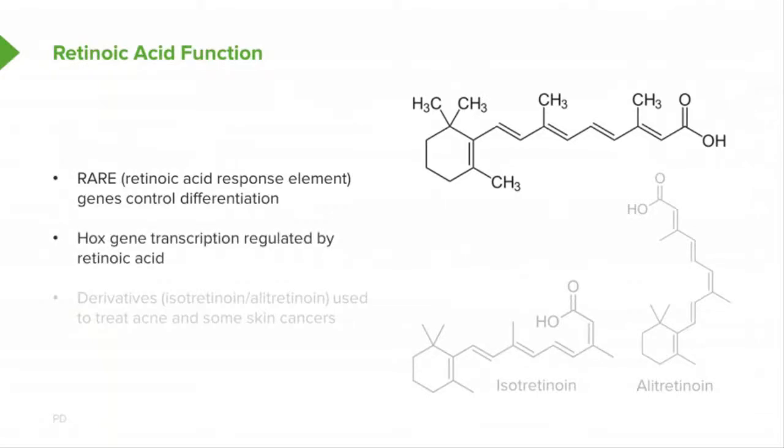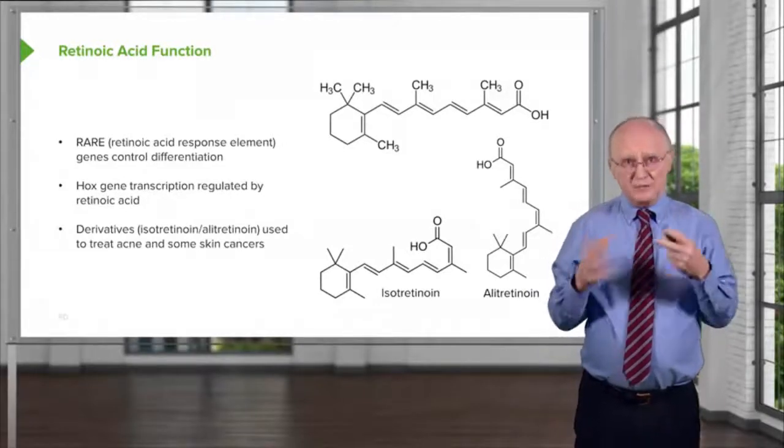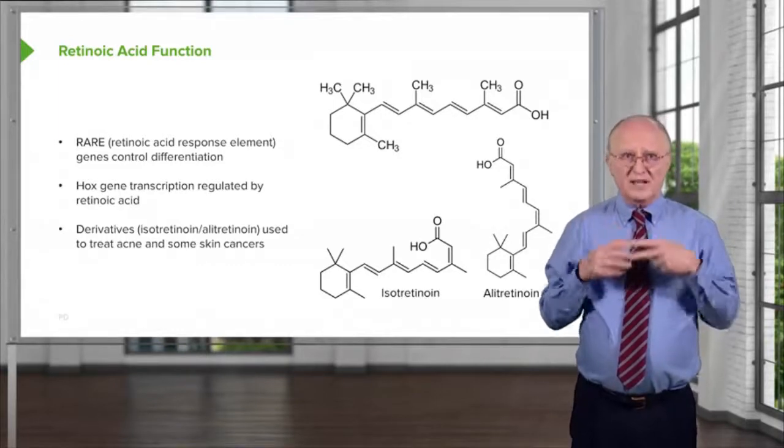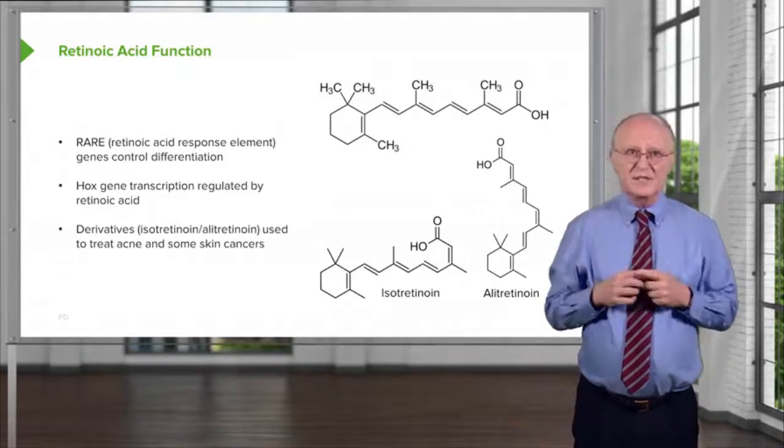As I said earlier, Hox genes that are involved in controlling differentiation of organisms that are like we are, are regulated ultimately by retinoic acid. RARE sequences, retinoic acid response elements, are sequences located upstream of genes that control differentiation. Now some of these genes are involved in the Hox gene transcription as retinoic acid is involved in controlling them. These are regulated by retinoic acid acting through the RAR binding to these RARE sequences as we see here.